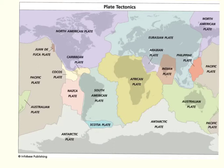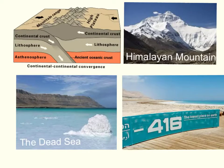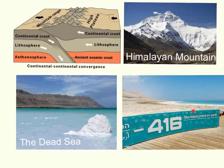There are 12 big plates and other small plates. The movement of the tectonic plates can cause changes in the lithosphere, such as the Himalayan mountains in India, which are the highest places on Earth. On the other side, the lowest place on Earth is the Dead Sea in Israel.